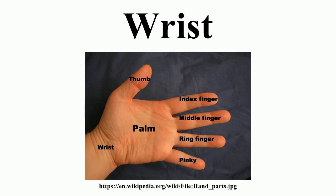Additionally, the joints between the bases of the metacarpal bones, the intermetacarpal articulations, are strengthened by dorsal, interosseous, and palmar intermetacarpal ligaments. The radiocarpal, intercarpal, midcarpal, carpometacarpal, and intermetacarpal joints often intercommunicate through a common synovial cavity.